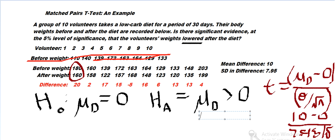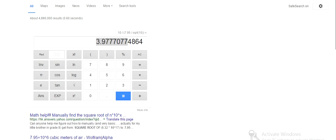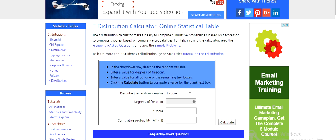We get t equals 3.977 and then df equals n minus one. We pop that into StatTrek, so df is 9, t is 3.977.